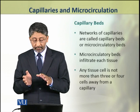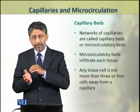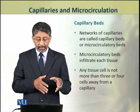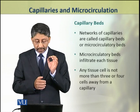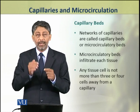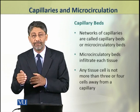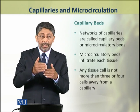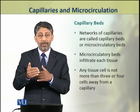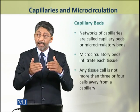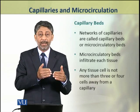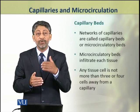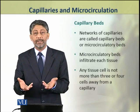Microcirculatory beds infiltrate each tissue so that any tissue cell is not more than 3 or 4 cells away from a capillary. So the blood flow in capillaries is very close to the cells. And if any cell is not directly approaching a capillary, it is still only 2 or 3 cells away from one, so that diffusion can operate in this region.